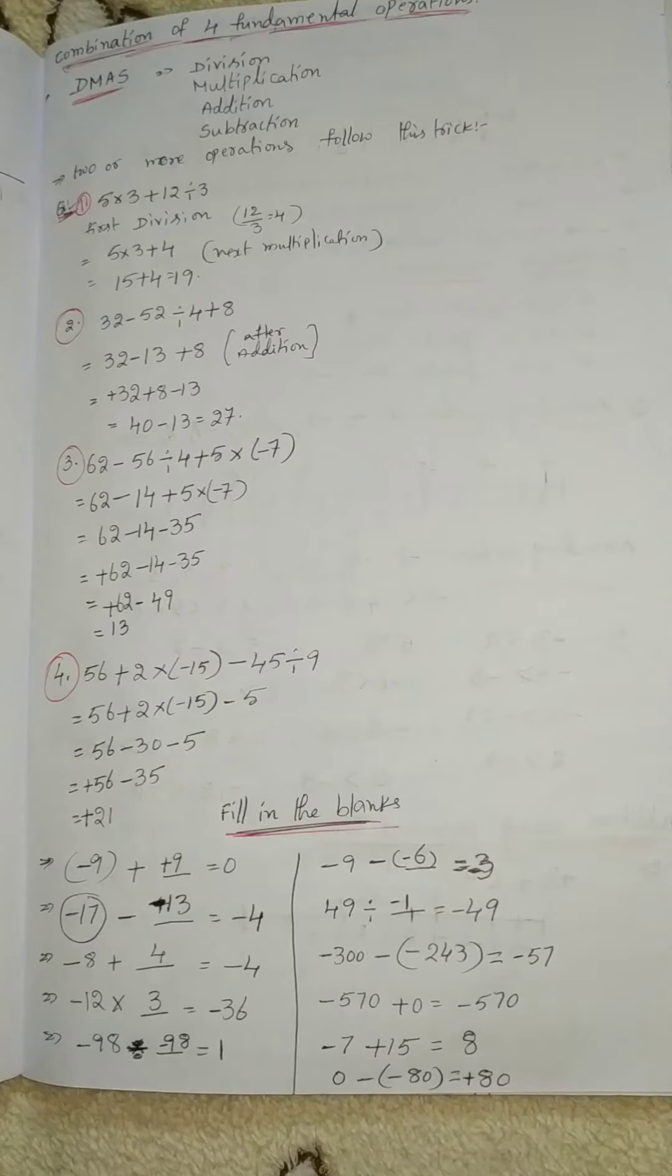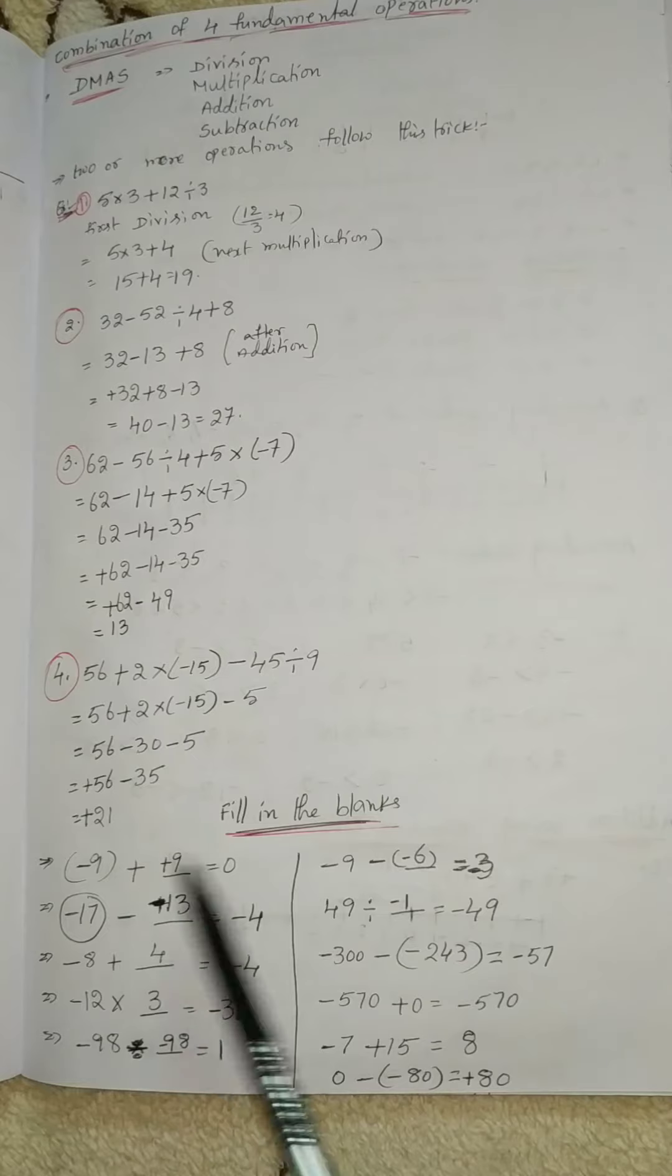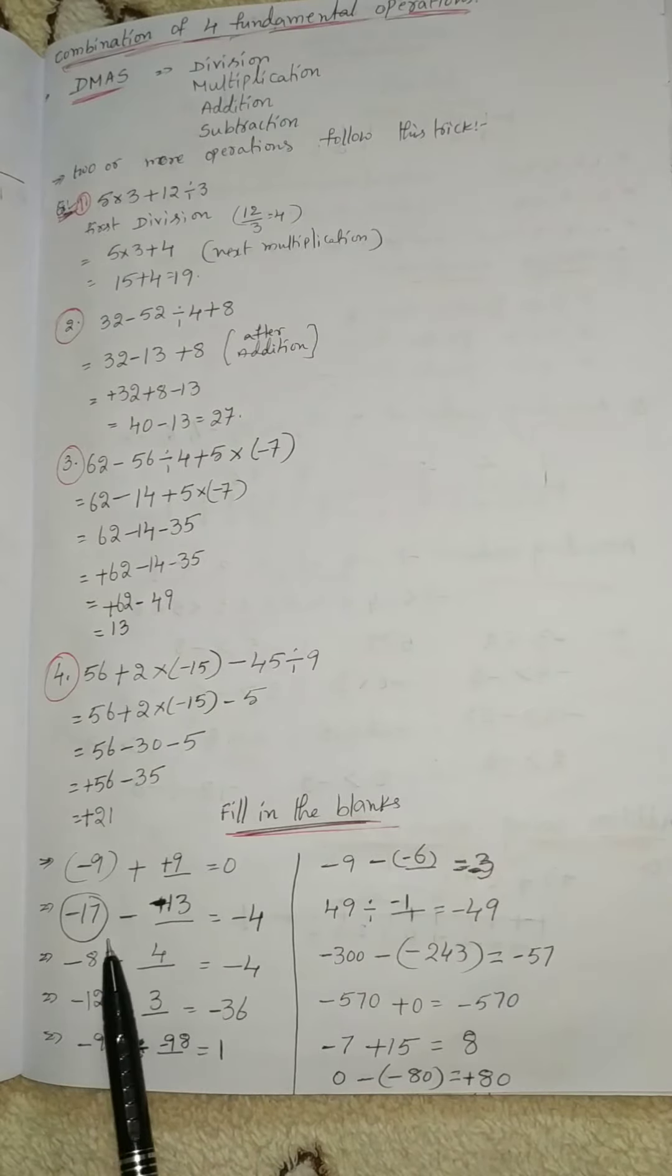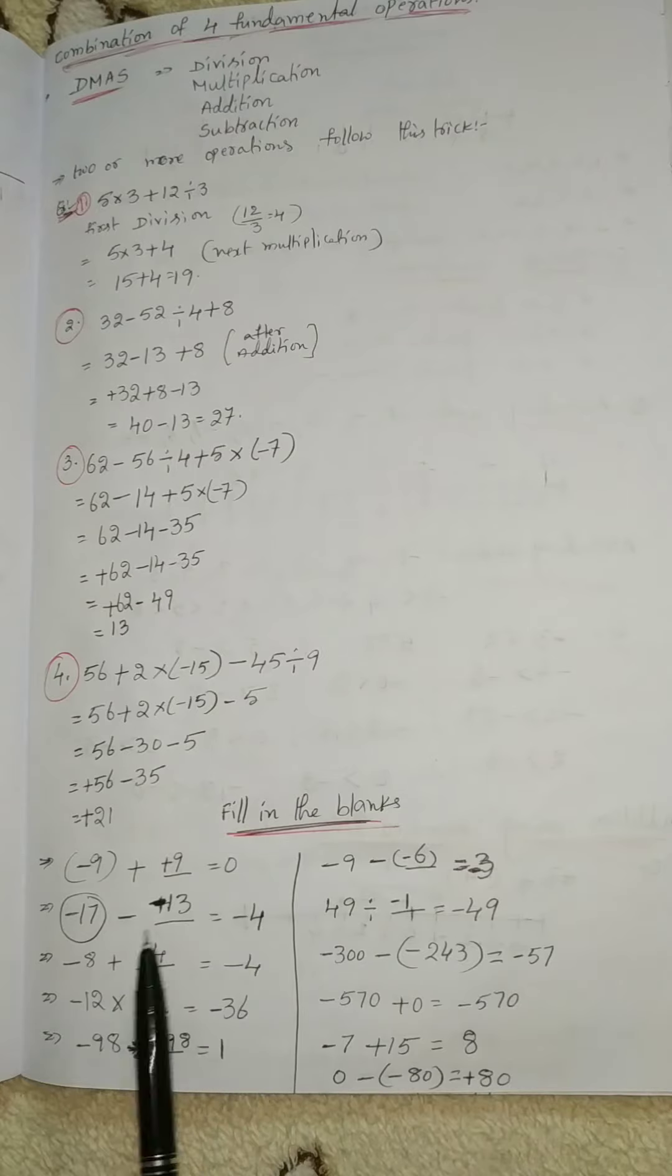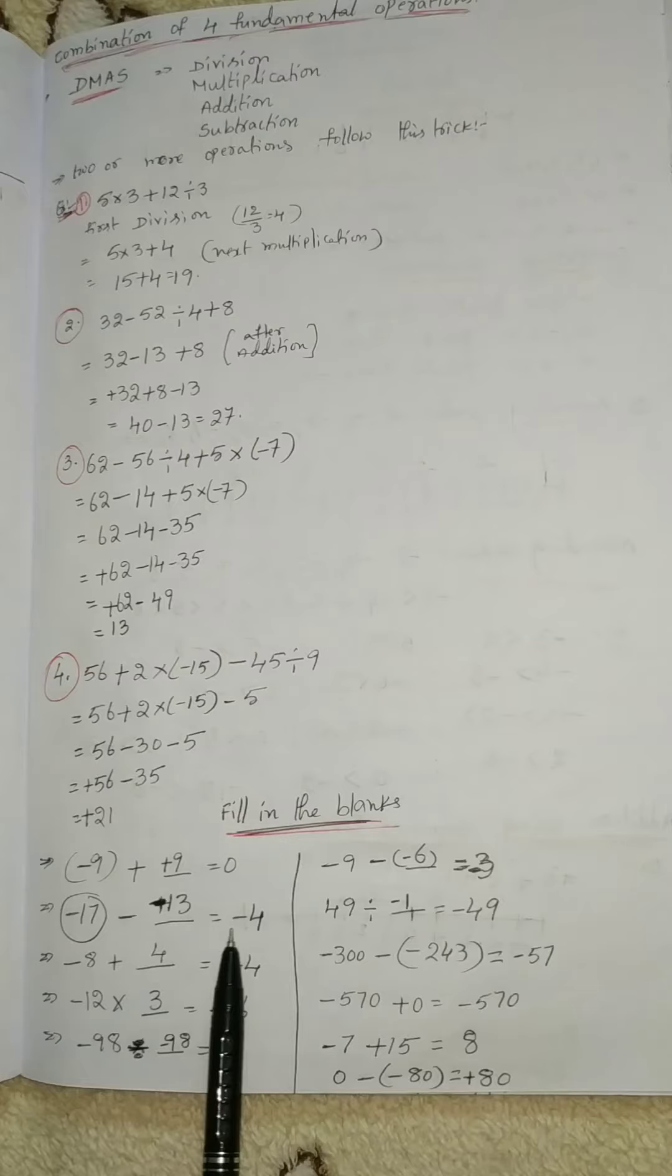Hello everyone, welcome to my channel Book of Science. Today: -9 plus 9 equals 0. -17 minus what equals -4? So -17 minus -13 is -4. -8 plus which number will get -4?